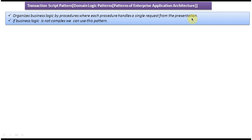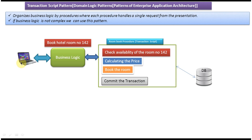We will see one example so that you will understand this. Here you can see a client who wants to book one hotel room — room number 142. This is one business logic. As per the Transaction Script design pattern, we have to write one procedure. This procedure is called the room book procedure, and another name for this procedure is transaction script.